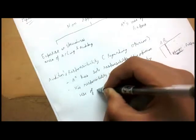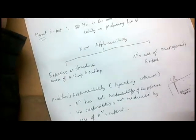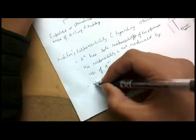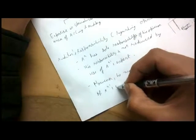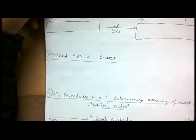The auditor has sole responsibility for his audit opinion — his responsibility is not reduced by the use of an auditor's expert. At the same time, he may use the work of an auditor's expert as audit evidence. That is in fact the only purpose of using the auditor's expert — he provides evidence to the auditor.